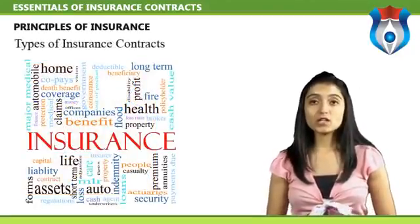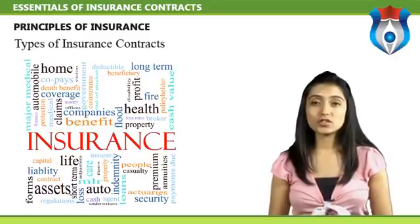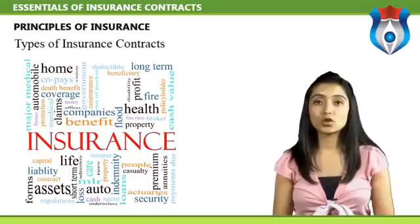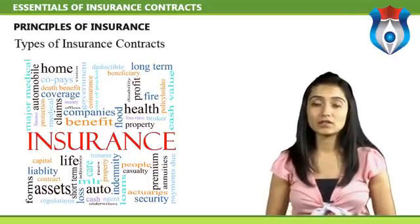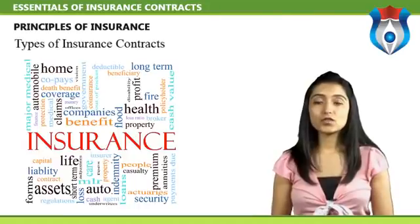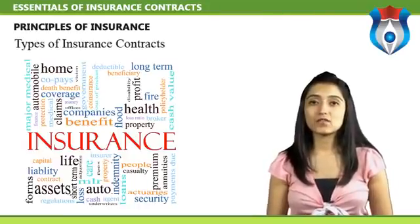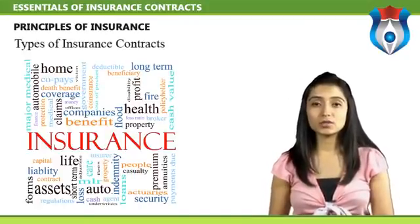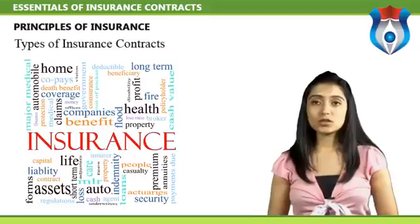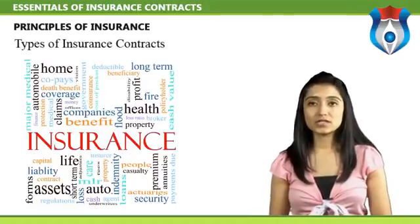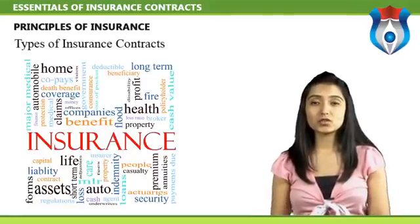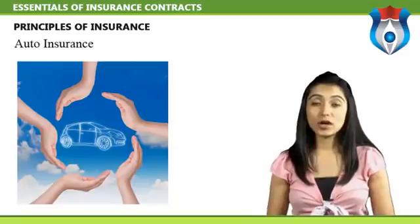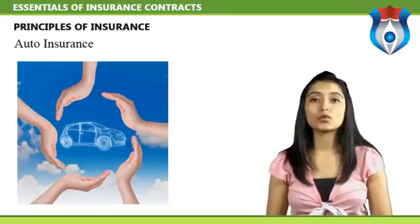Types of insurance contracts: insurance is the process of transferring the risk of a large financial loss to a company willing to pay for the loss in exchange for a small guaranteed payment. As such, insurance can exist for just about anything in every industry, and there are as many different types of insurance as there are items to be insured. Most consumers will work with only a handful of insurance types to satisfy their needs. Auto insurance, for example, pays for damages arising out of a loss involving automobiles.